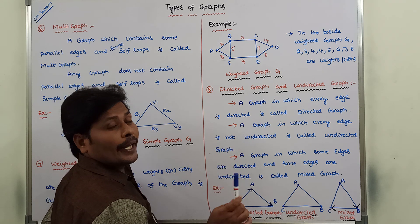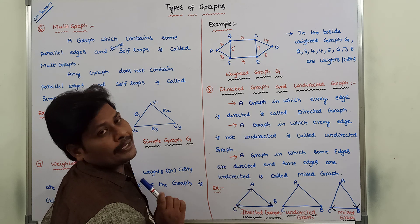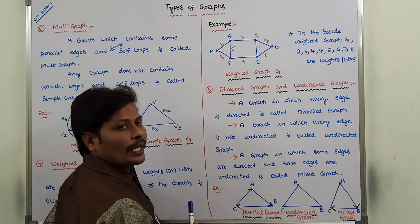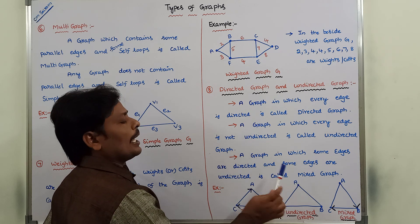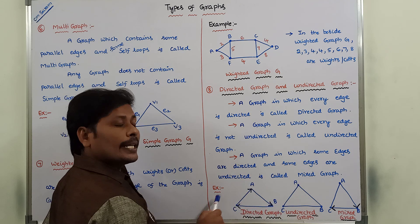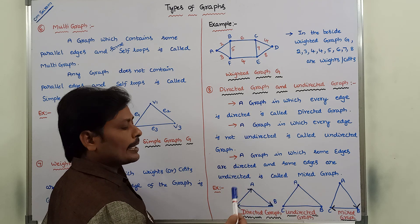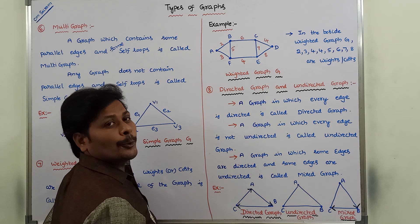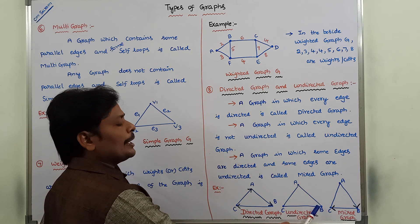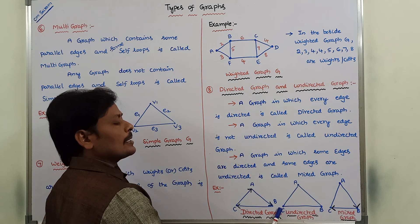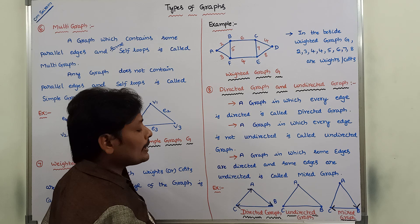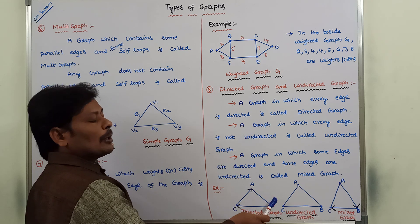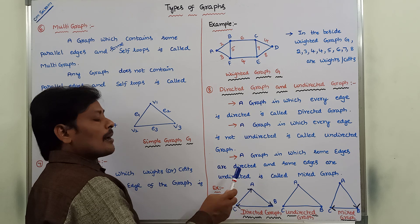In an undirected graph, every edge is not directed. Here, A to B, B to C, and C to A are edges, and in the same way B to A, A to C, and C to B are also valid. In the undirected graph, A to B is equal to B to A. But in the case of directed graph, A to B is not equal to B to A, B to C is not equal to C to B, and C to A is not equal to A to C.